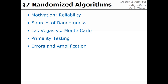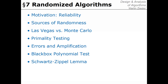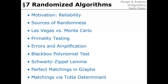We discuss two types of classes of randomized algorithms: Las Vegas versus Monte Carlo algorithms. We will see an example application, namely primality testing — testing whether a given natural number is a prime number or not. We'll cover errors of randomized algorithms formally and amplification that decreases the probability for randomized algorithms to make such errors.